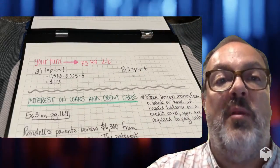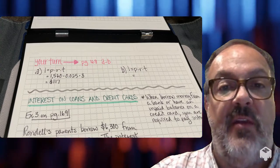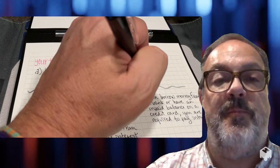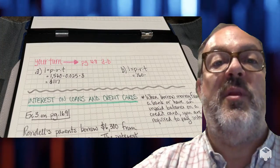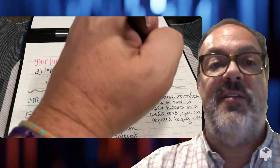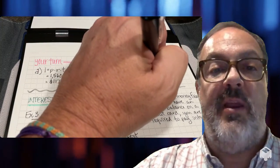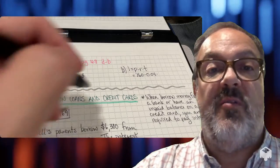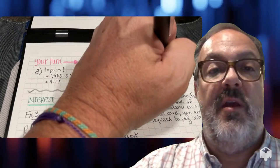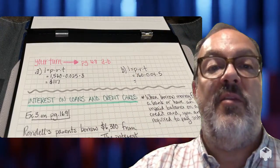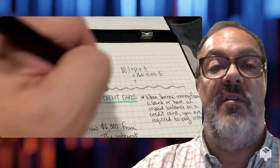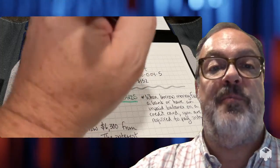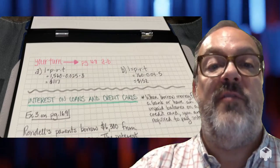In problem B, we'll start again with I equals principal times rate times time. My principal is $760, my rate is 4%, or 0.04, and I'm going to multiply that by the years, which is 5. When I multiply all three of those numbers together, I get $152.